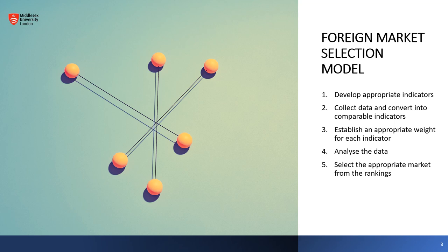Let's take a look at the foreign market selection model. Within this model, we have five components. The first being developing appropriate indicators — what information can we gather that's really going to tell us whether or not this is a good opportunity, a bad opportunity, or a fruitful opportunity, or might this cost us a lot of money? The second component is collecting data and converting it into comparable indicators. The third component is establishing an appropriate weight for each indicator, followed by analyzing the data that we've collected. And then number five, select the appropriate market from the rankings that we have determined.